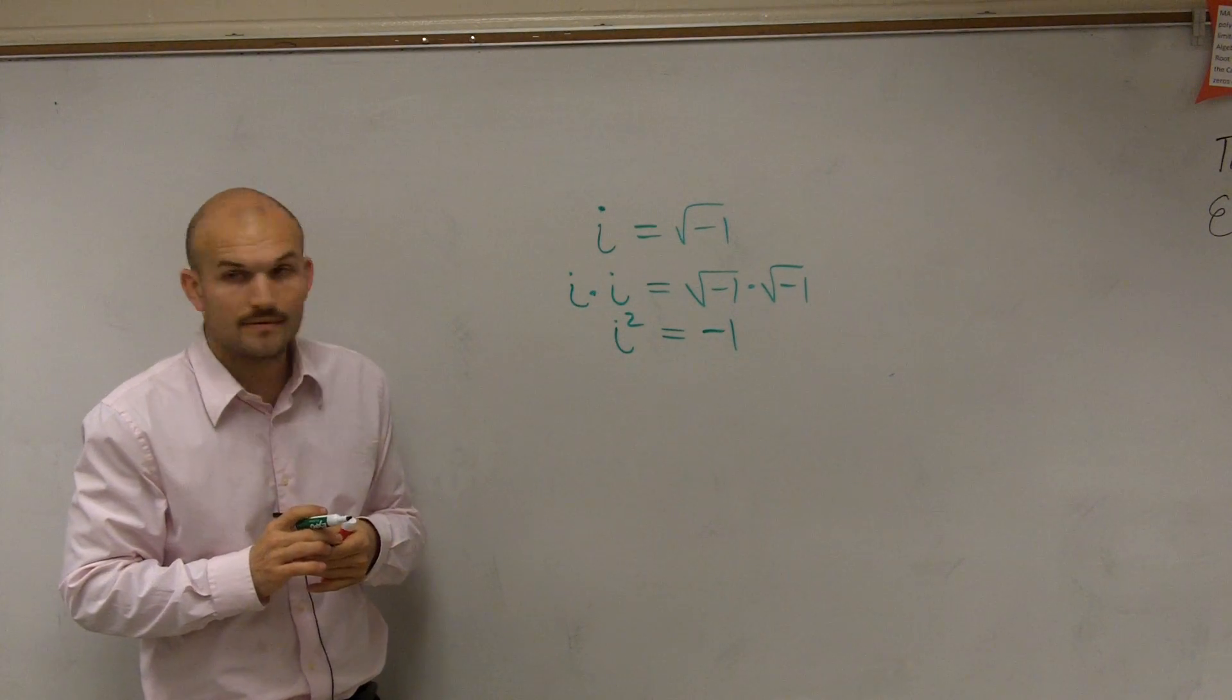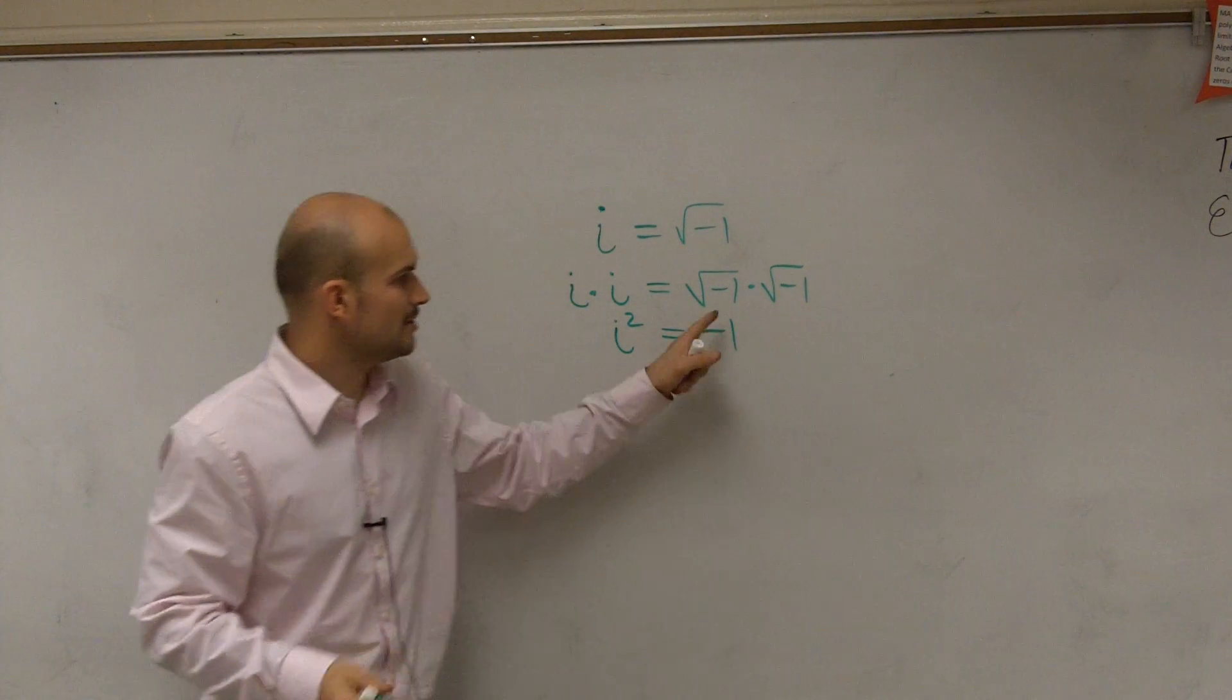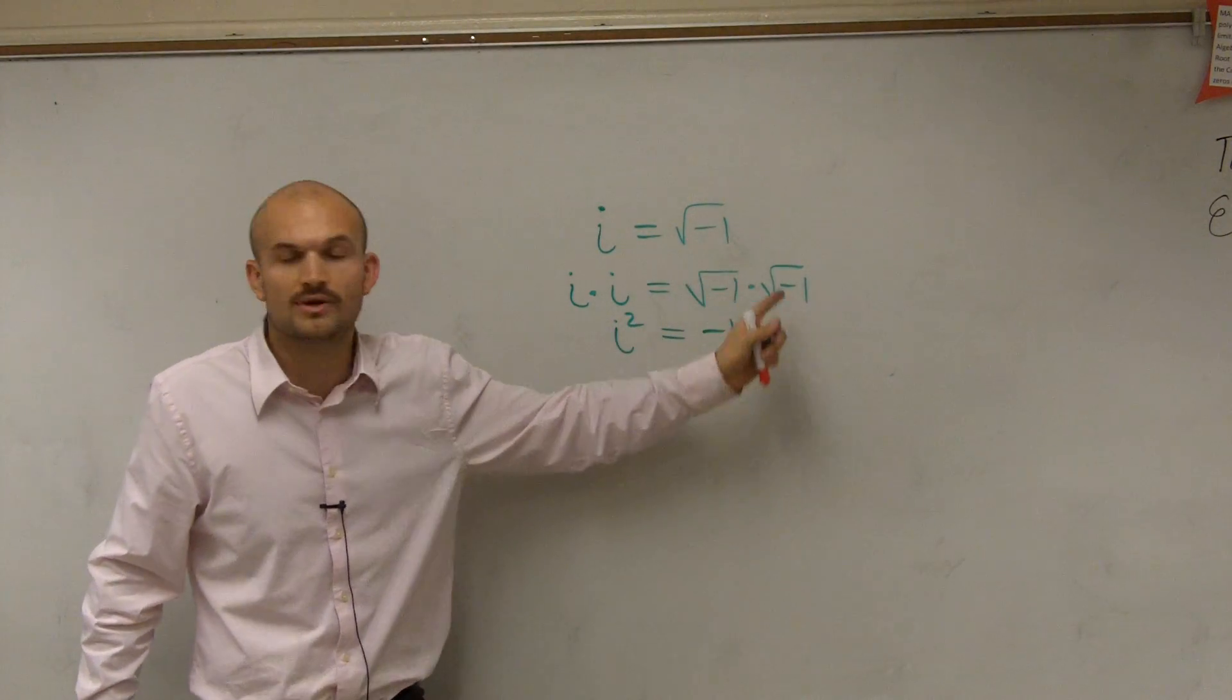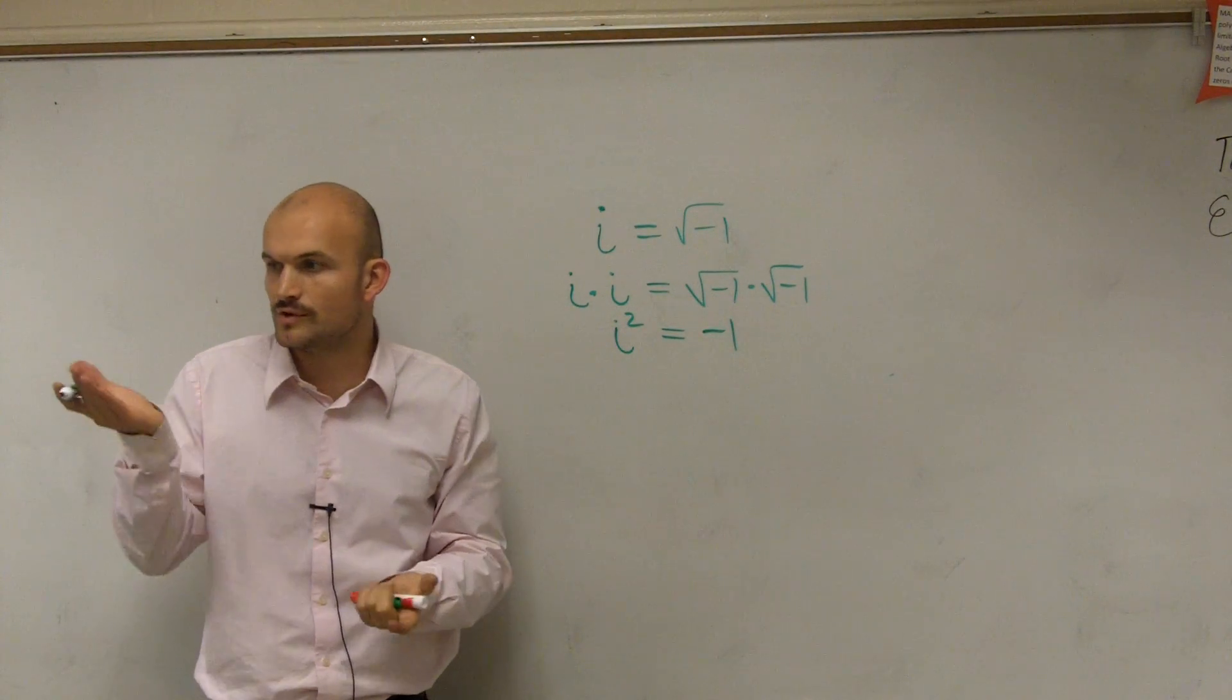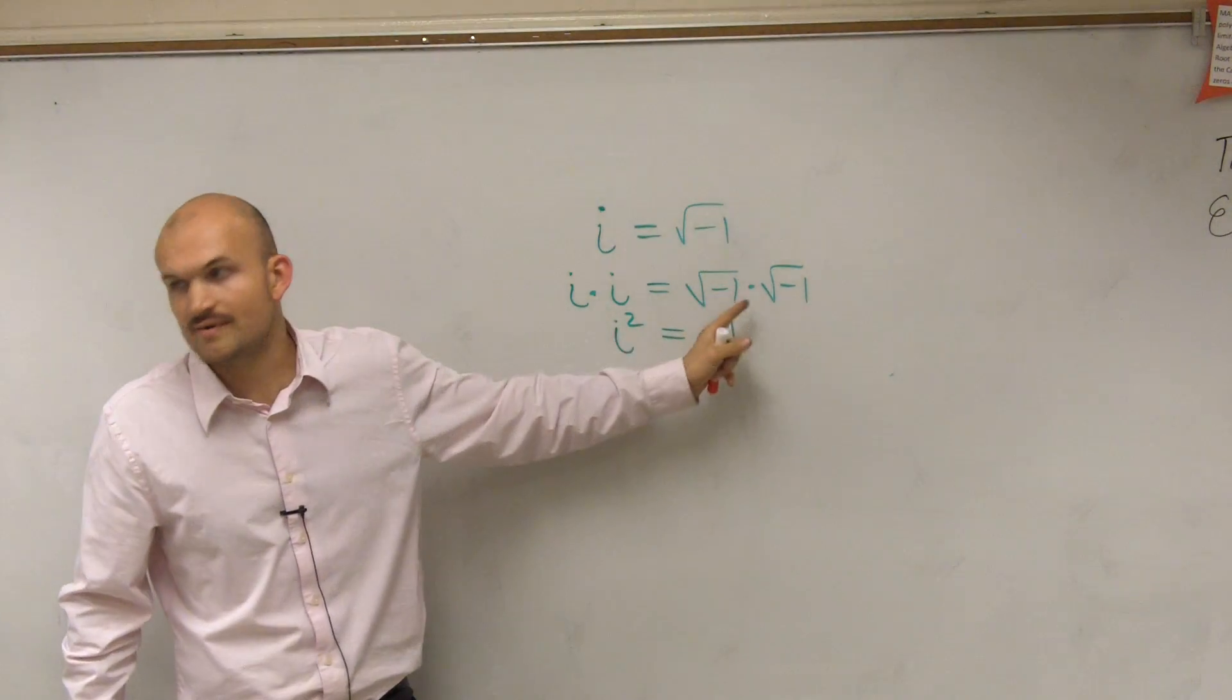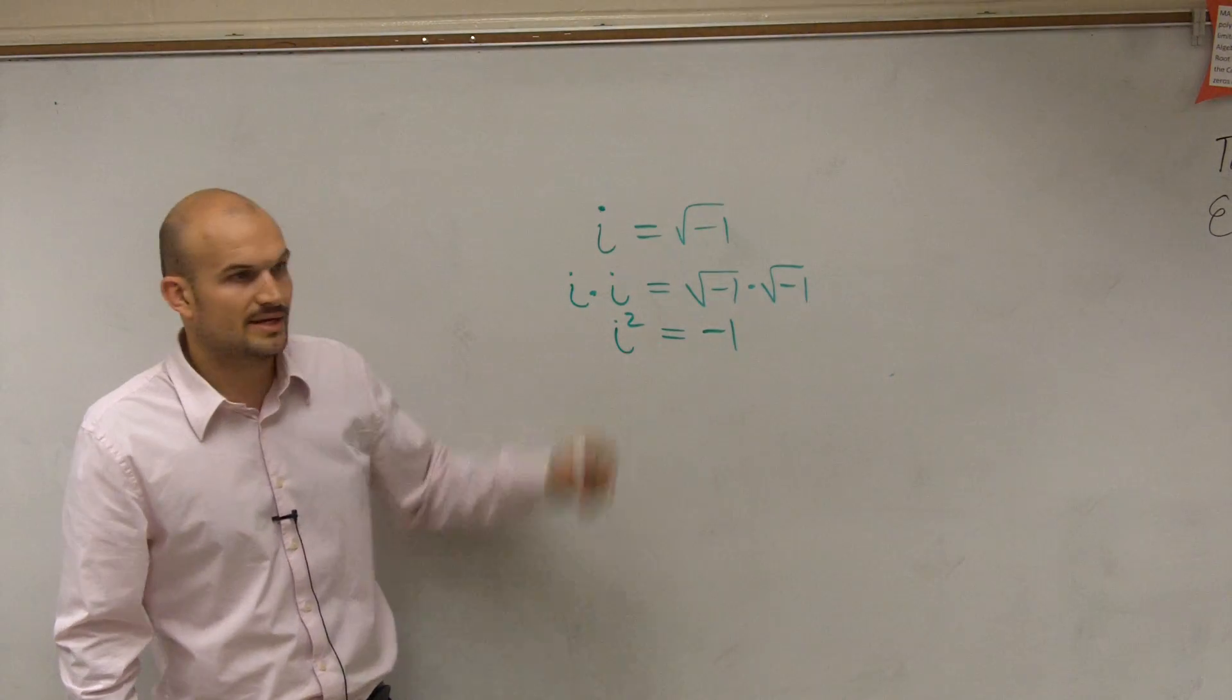All right? Just remember, this becomes negative 1 squared, the square root of negative 1 squared. So the square root and the squaring are inverse properties, so they're going to just cancel out. You're not going to actually apply them to your negative 1. So then we get negative 1.